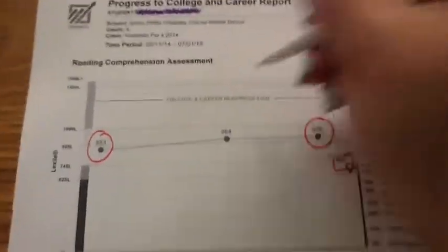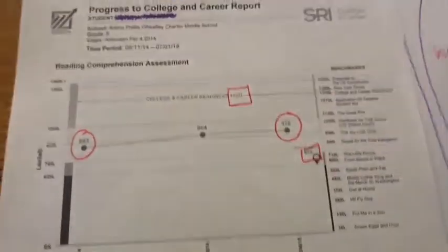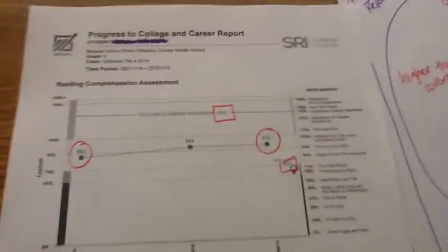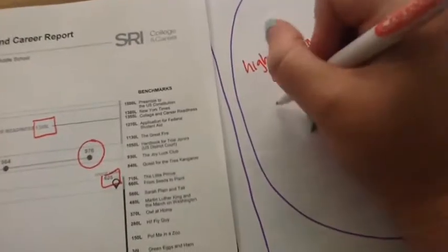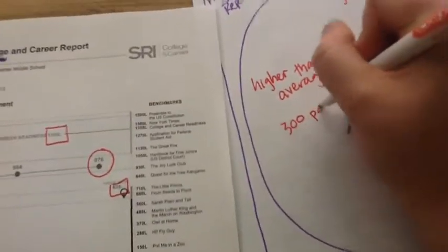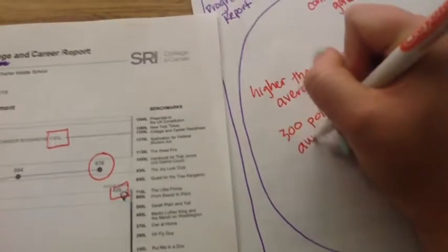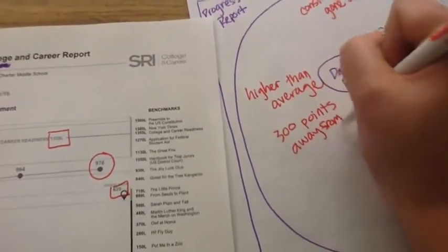But when I look at seeing college and career readiness, that's at a 1355, which shows me that I'm not quite ready for college and career. So I'm about 300 points away from being ready for college. Away from college.